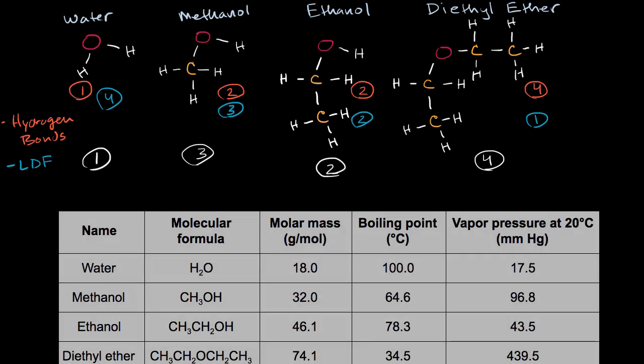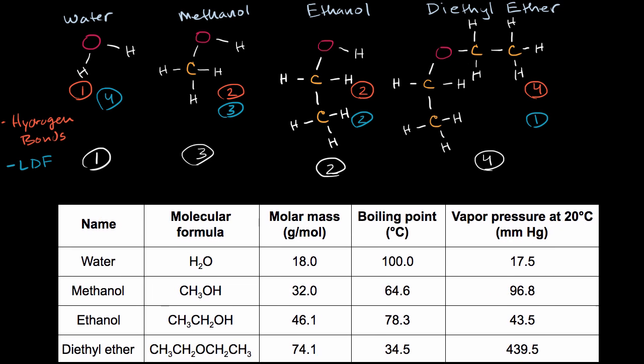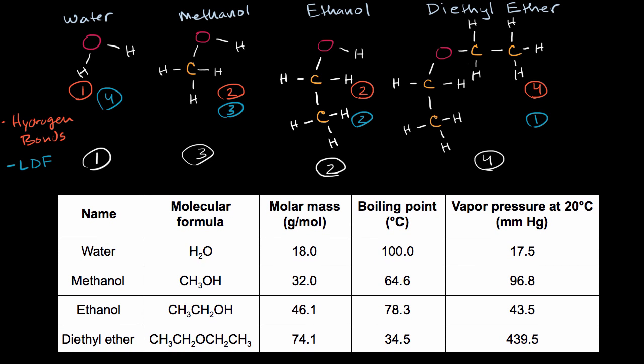And if we look at the actual data, it's consistent with what we just talked about. We can see very clearly that water has the highest boiling point, ethanol is second, methanol is third, and diethyl ether was fourth, completely consistent with our intuition.